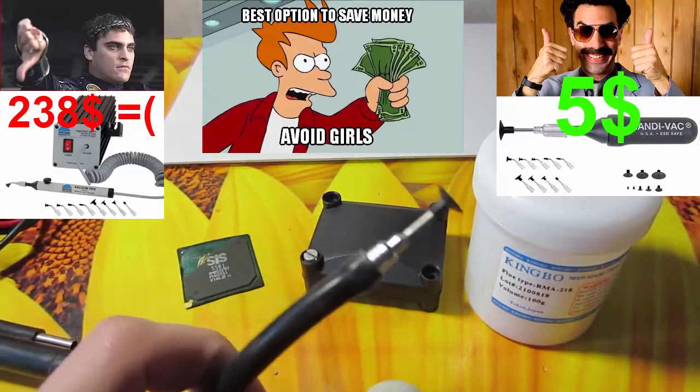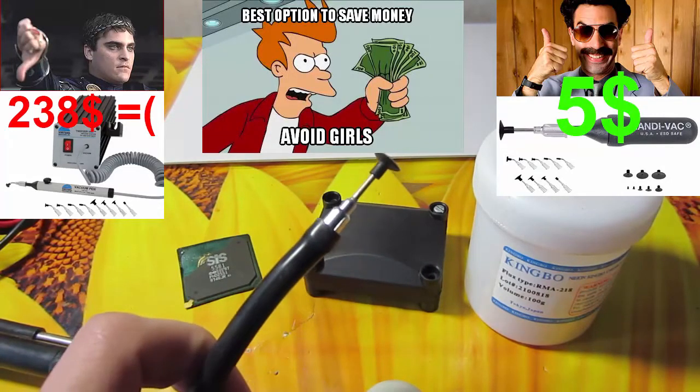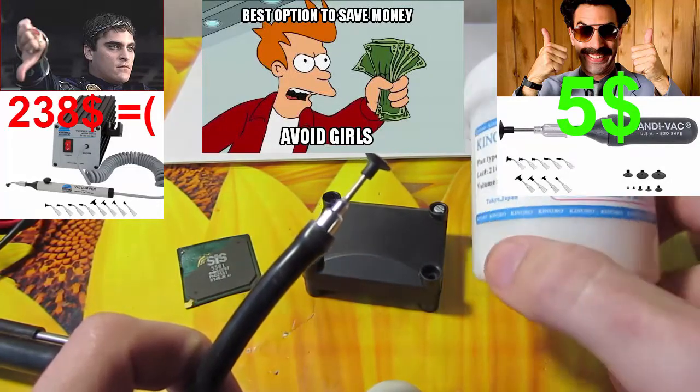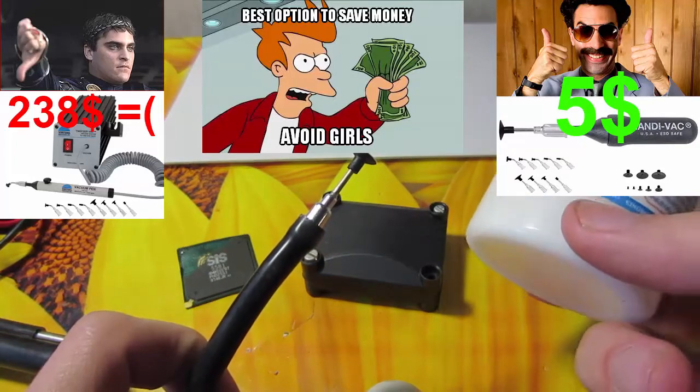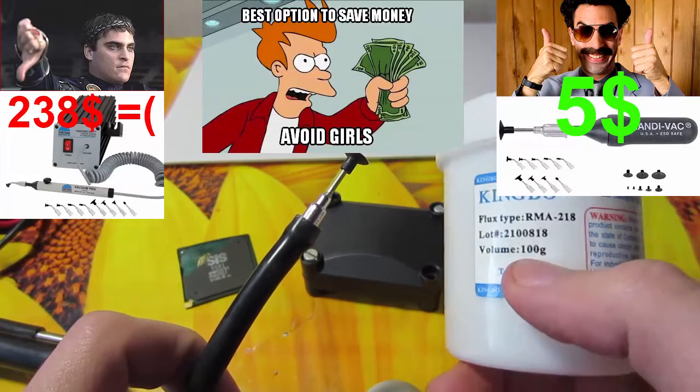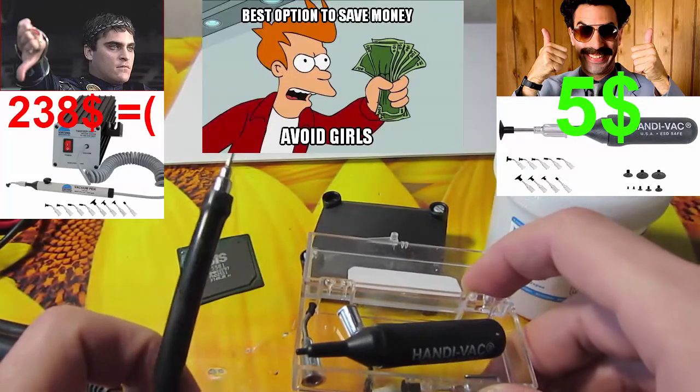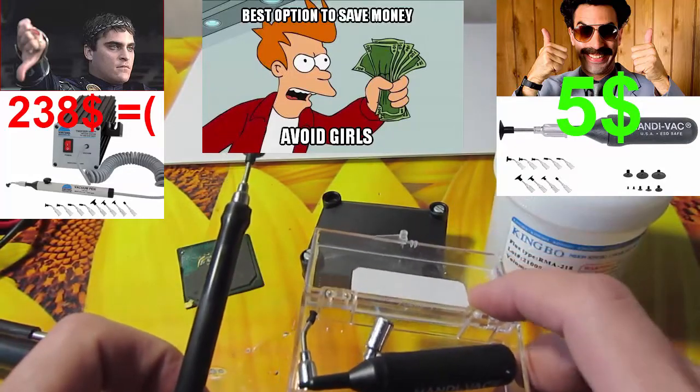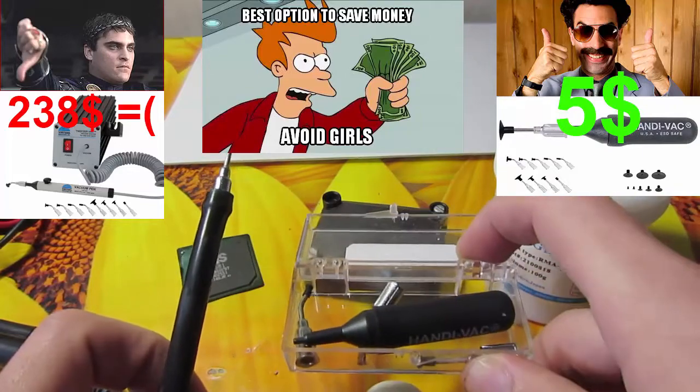It works just super fine and has a lot of power. It lifts even a can of King Bo IMA flux that is something about 100 grams. So if you have a smoke absorber, you can buy this set and